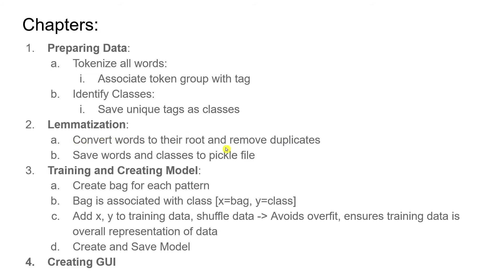We will also remove duplicates of the same word, and then we will save words and classes to a pickle file. A pickle file helps save Python objects into a file — like if you have a list or a dictionary, you can directly save those things into a file.